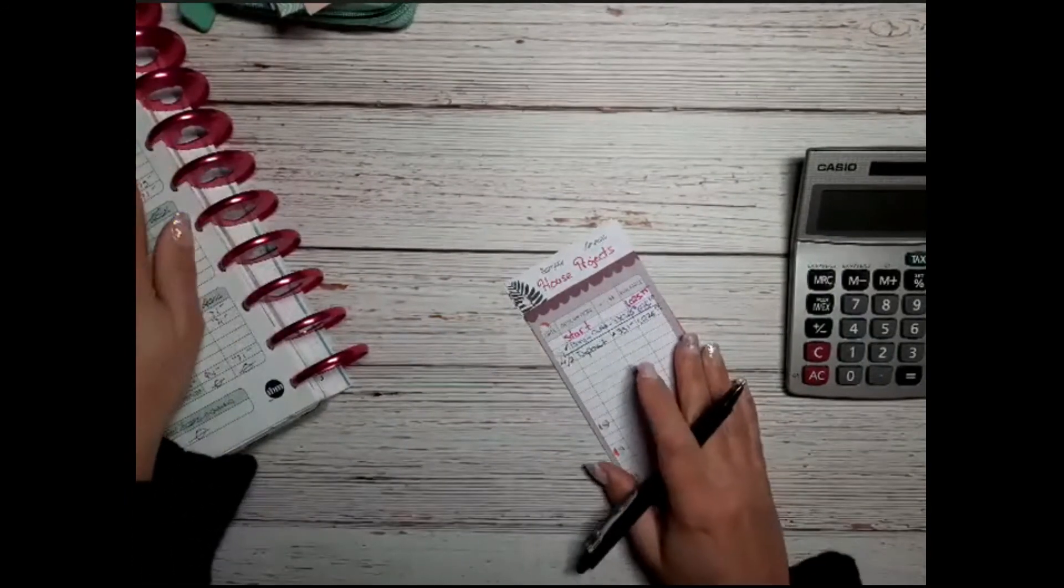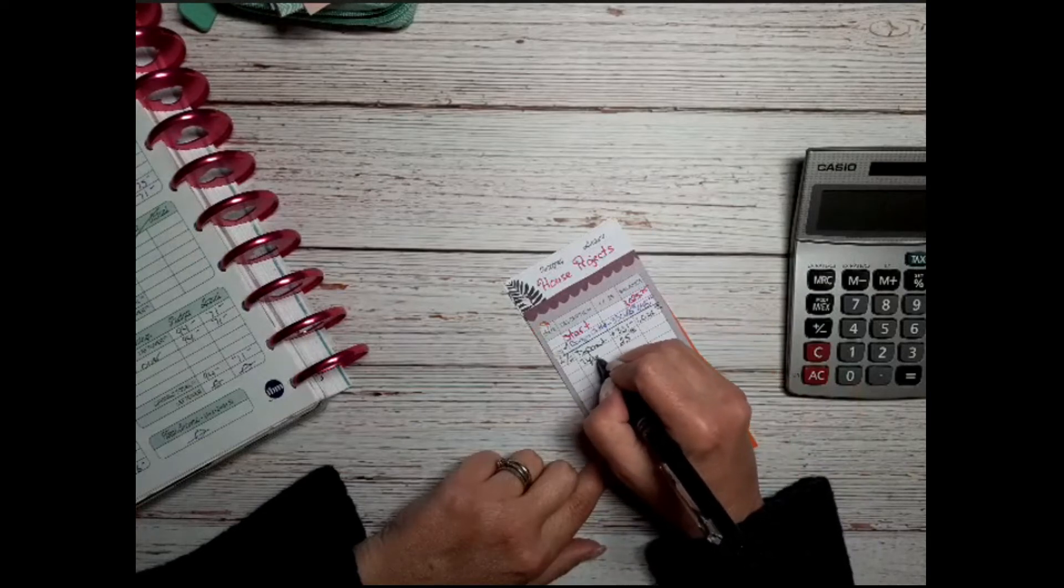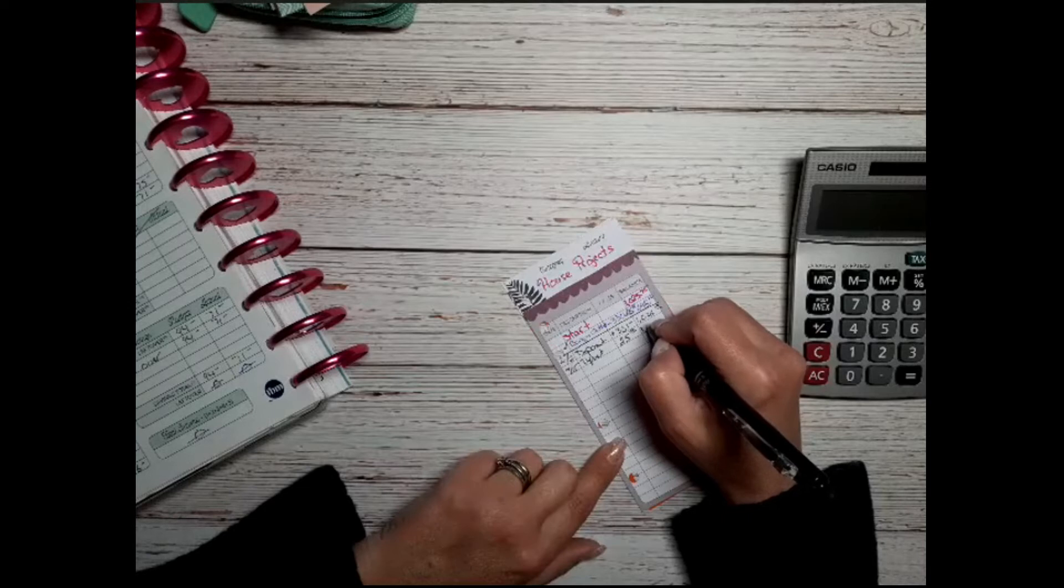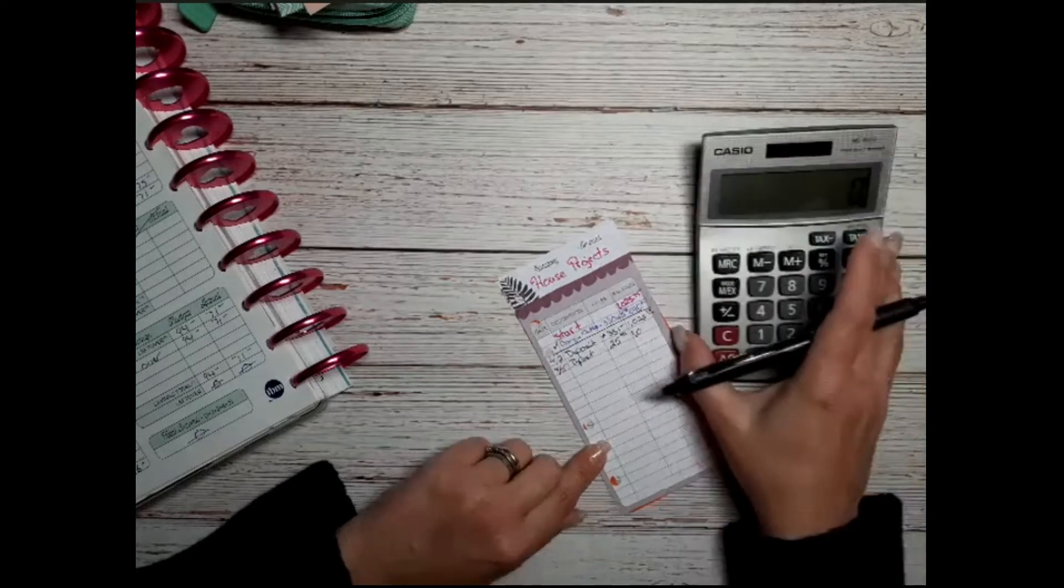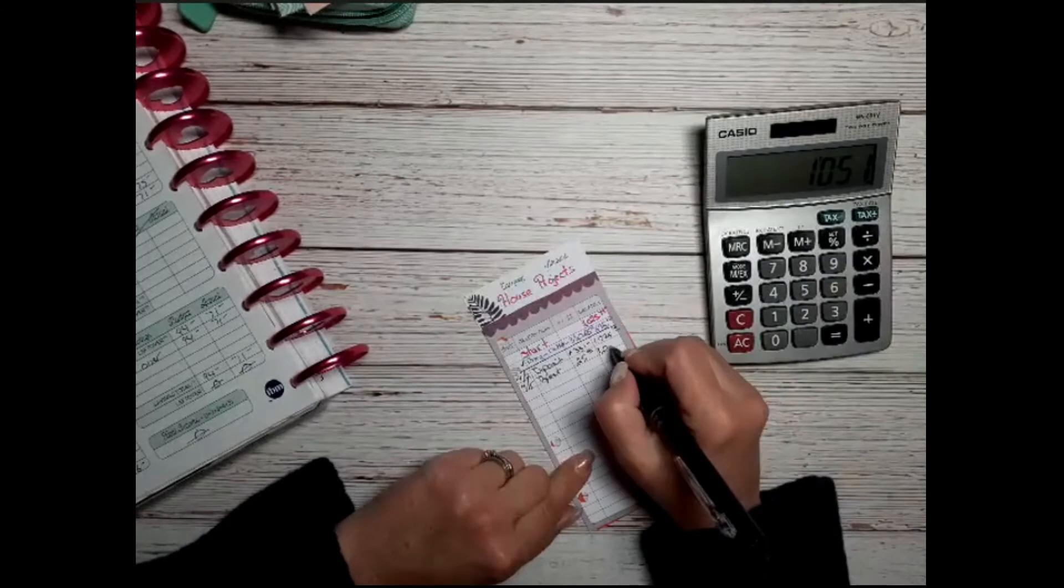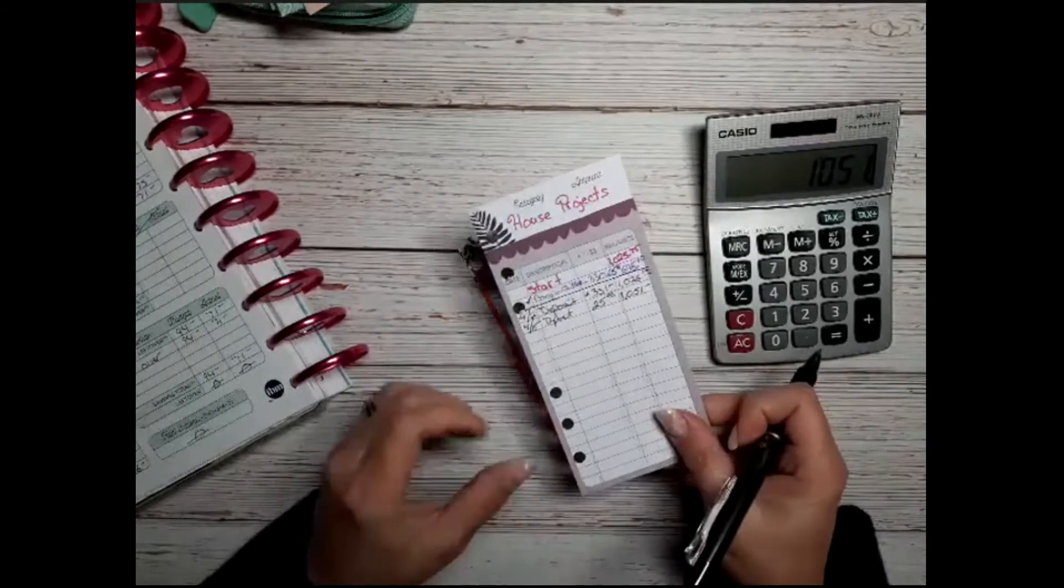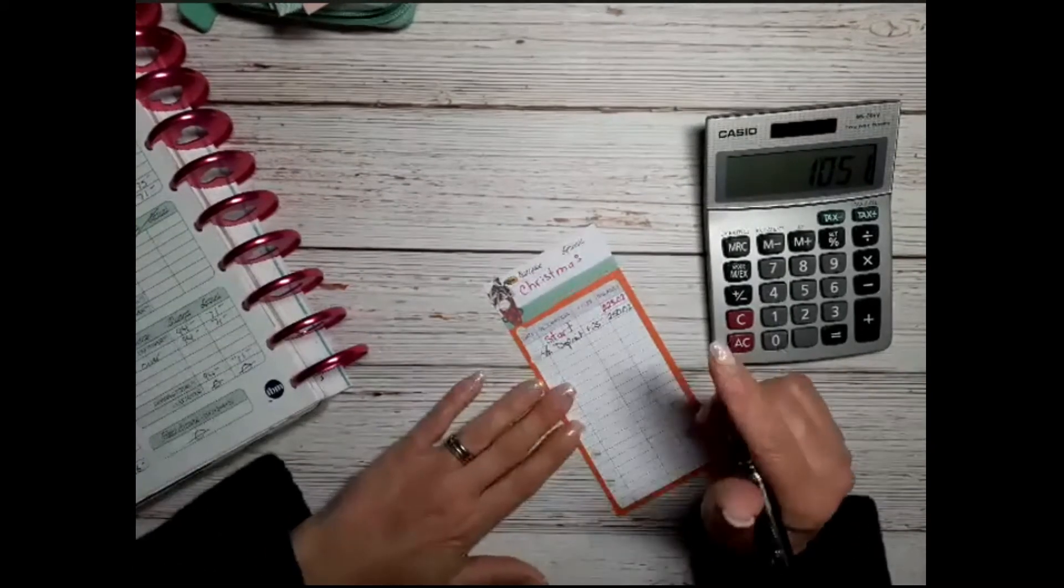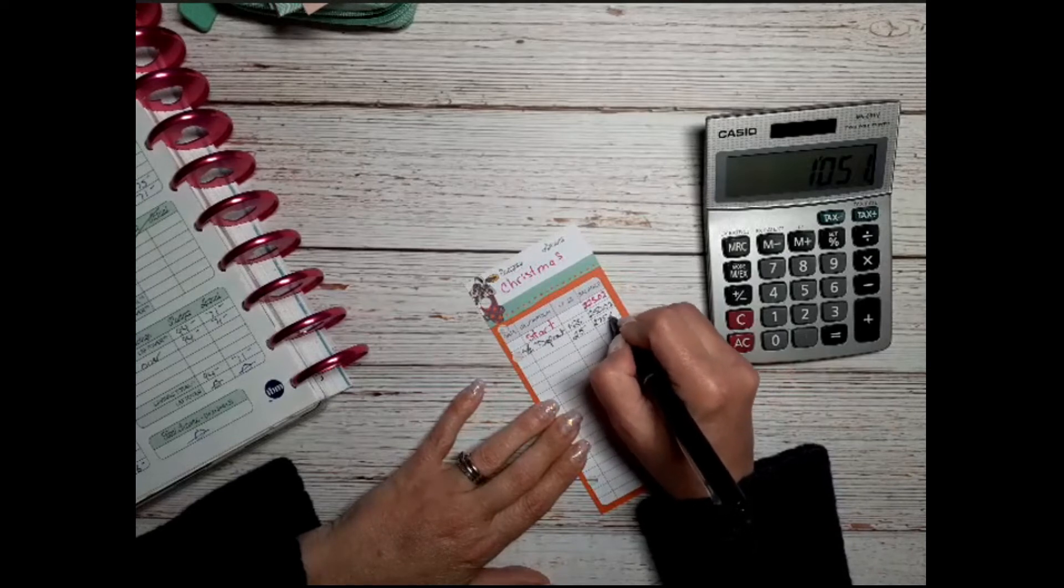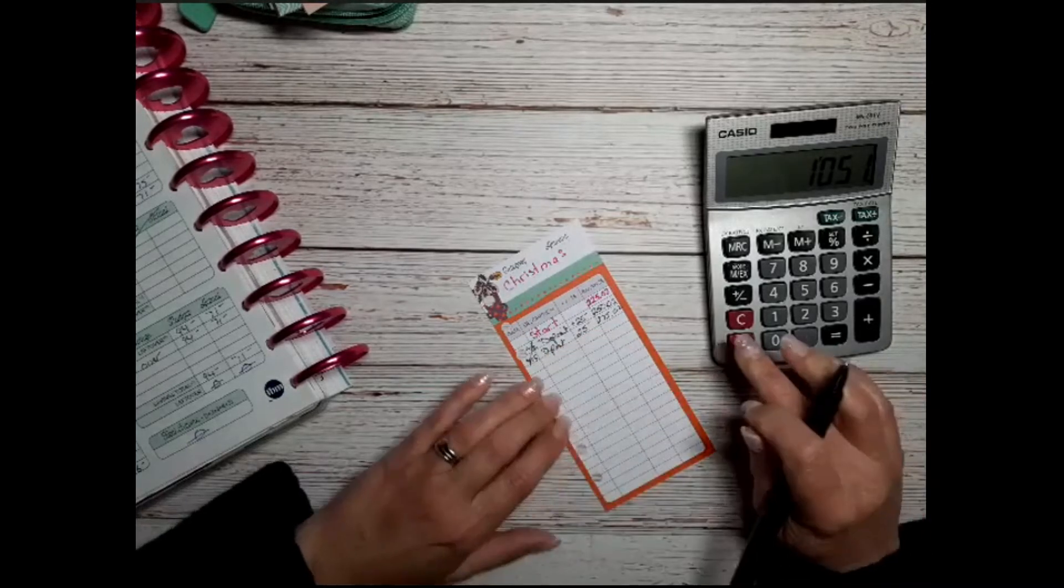House projects is going to get $25, $1,290. Oh poop, alright hold on. $1,026 plus $25, should have been able to do that in my head but it is the end of the day and I've worked all day, so good excuse, right? Alright, that's house projects. And then Christmas gets its normal $25, so that would be $275. Alright, so we'll put those back in my wallet in a minute.